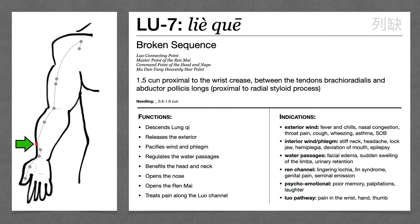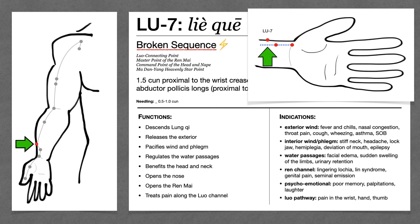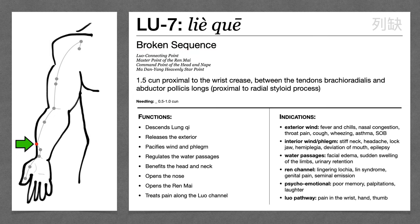The name of Lung 7 is Lieque, which means broken sequence, referring to the fact that Lung 7 is off the line of the lung channel, closer to the large intestine channel. Lung 7 is a very important point, so you should probably know all of those things.